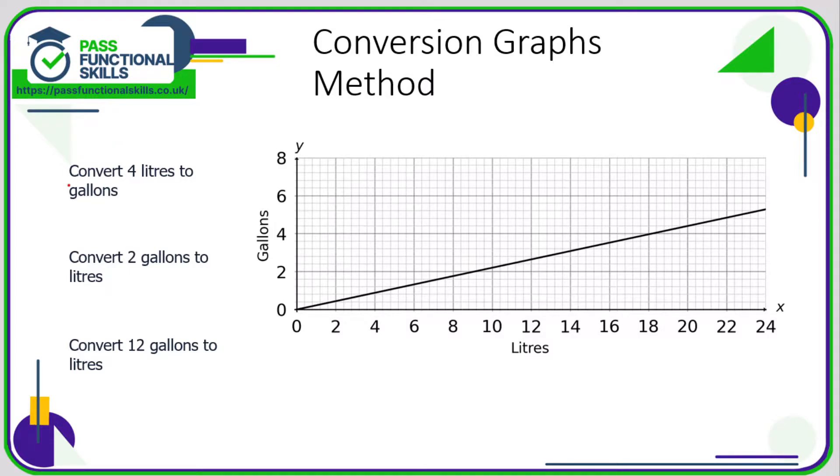We're converting four liters to gallons. What we need to do is locate four liters. Now liters is across the bottom, so let's find four liters which is here. All we need to do is go up to the line of the graph and go across and see where it hits the corresponding value on the gallons axis.